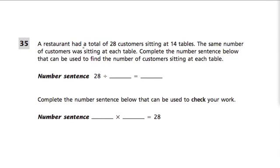In this problem, a restaurant had a total of 28 customers sitting at 14 tables. The same number of customers was sitting at each table. Complete the number sentence below that can be used to find the number of customers sitting at each table.